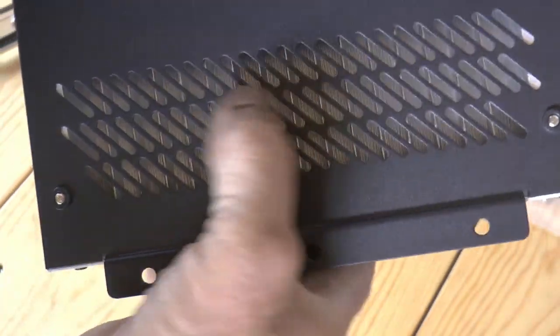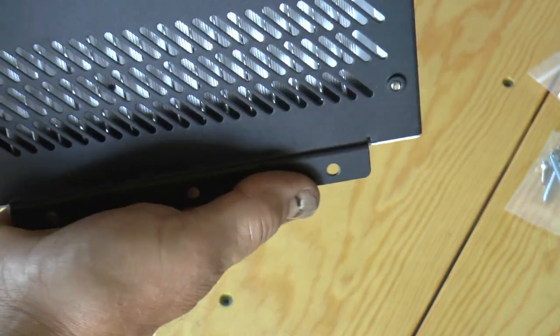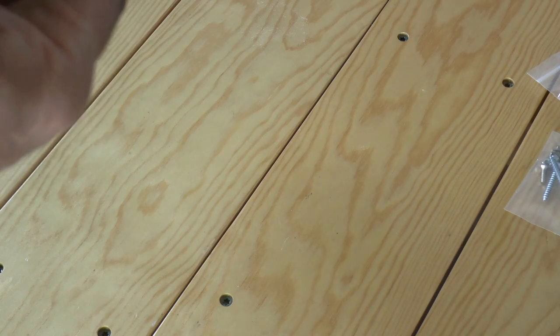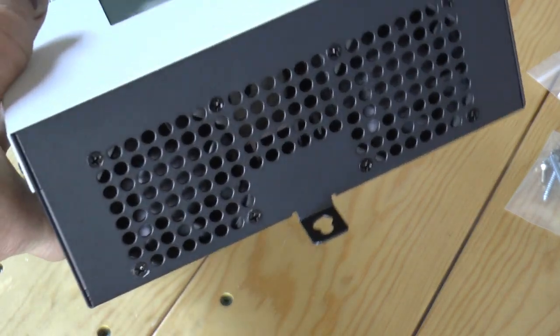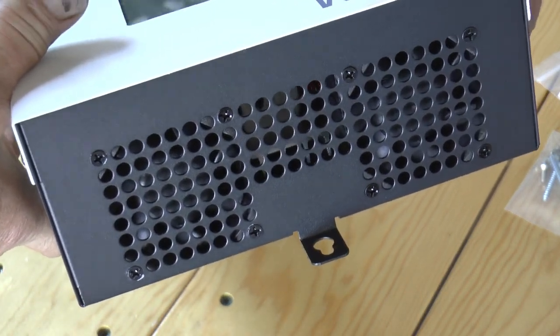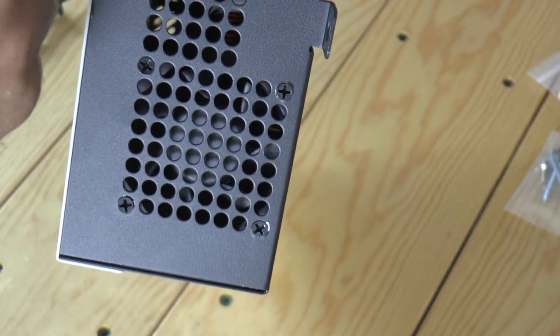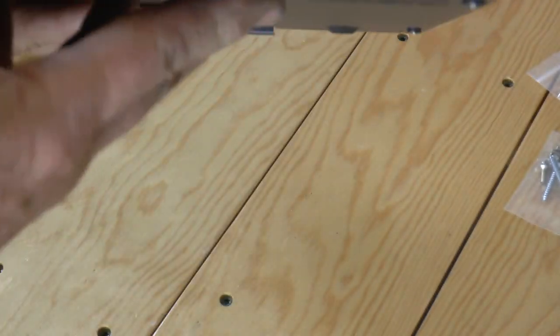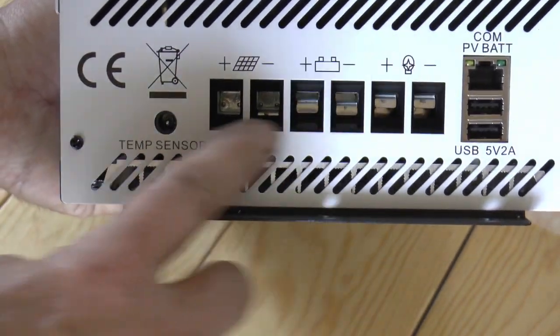It does have some pretty nice looking heat sinks in there. We got ventilation on the back with a little offset here. The bottom has ventilation, a little bit on the sides, and the top's got a lot of ventilation which is good for airflow but not so good if anything gets dropped down in there. I can see a fan there and a fan there. We got nice beefy looking terminal connections.